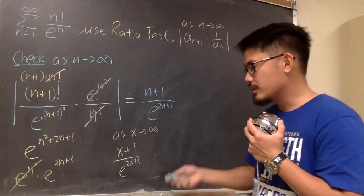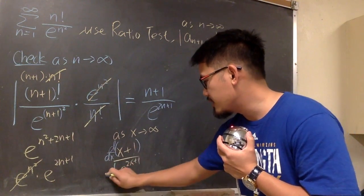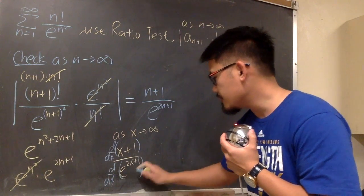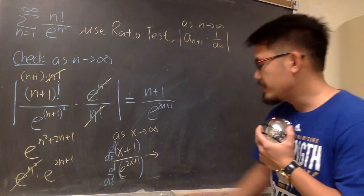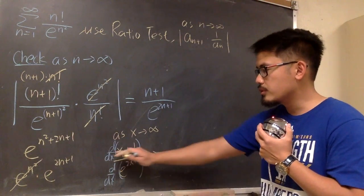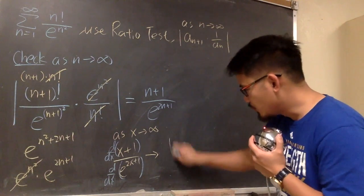Now, to use L'Hopital's rule, we take the derivative on the top, and then we take the derivative on the bottom. So, this is going to be the same as the derivative of x+1 is just 1, 1 on the top.